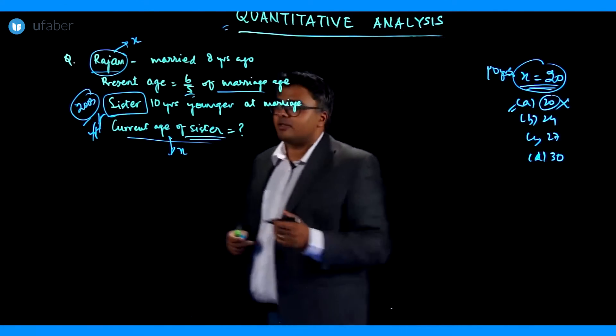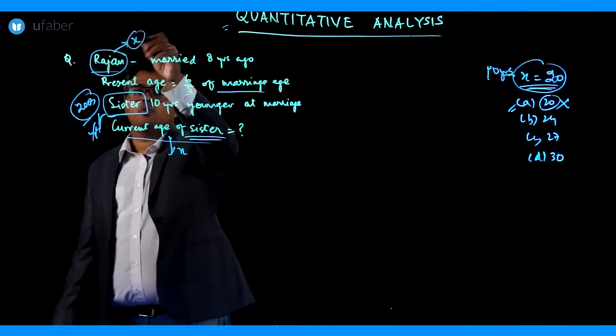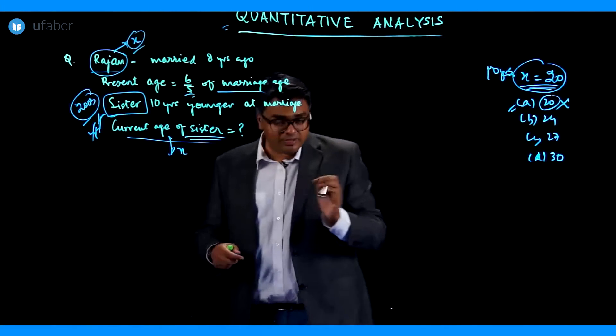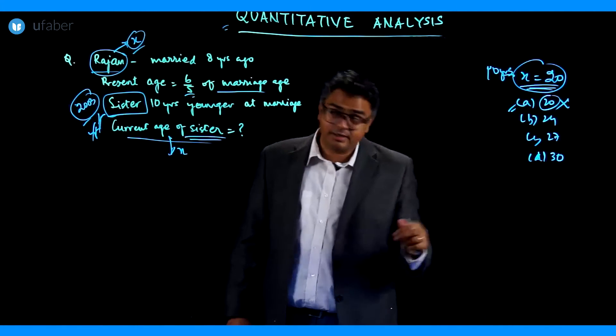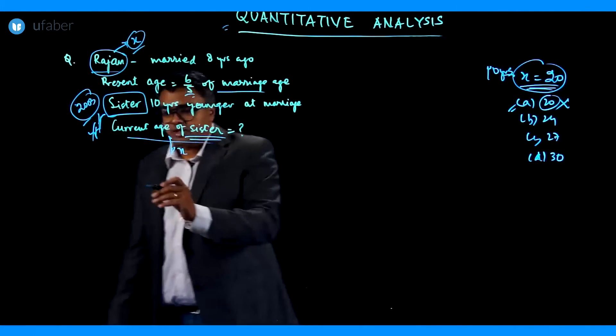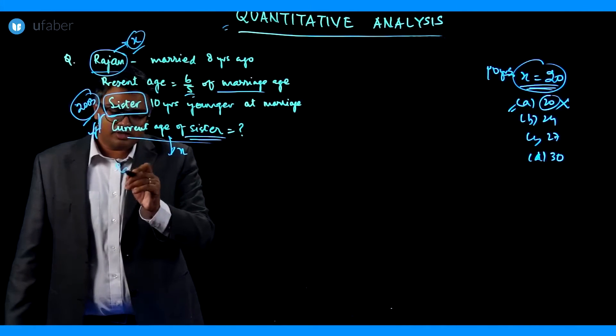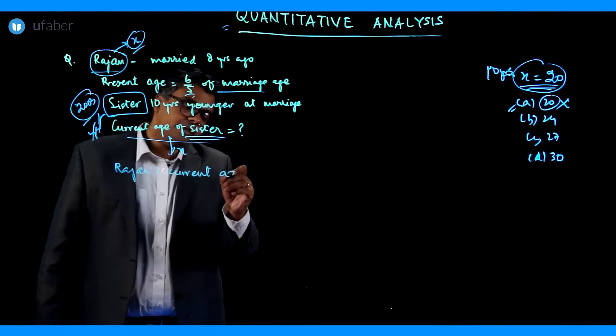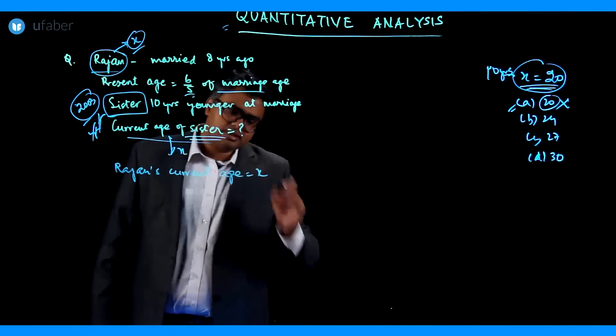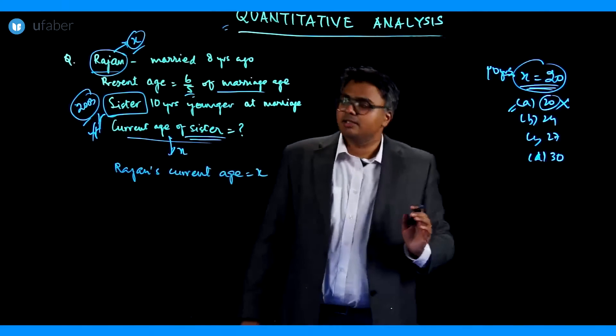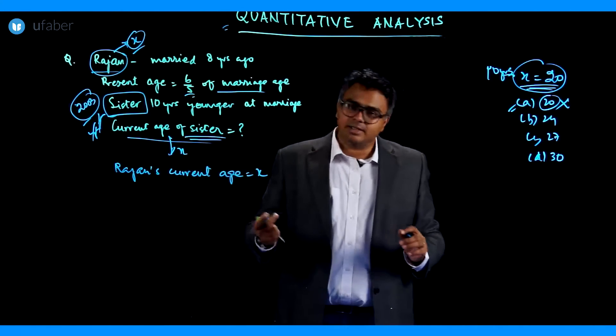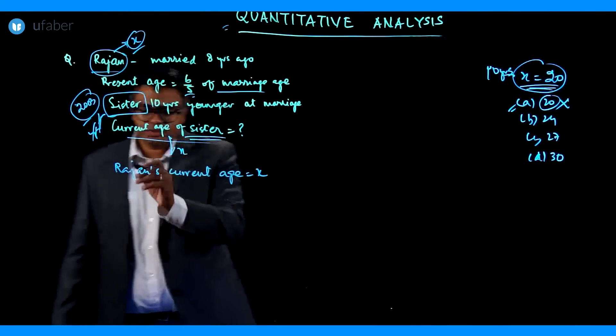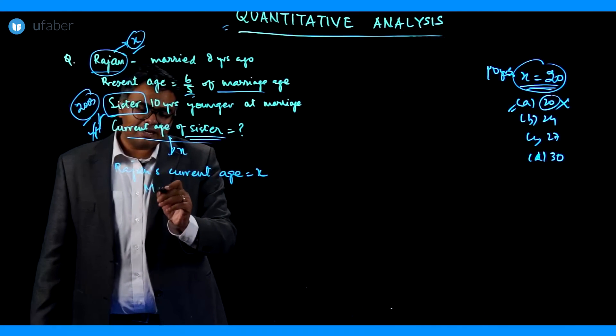So let's assume Rajan's age to be X. Let's assume Rajan's current age. We have to know Rajan had two ages, one currently, one at the time of marriage. So let's solve this equation now. We will say Rajan's current age is X. Let's assume that. Now we know when Rajan got married, then what would be his age? I will write it as marriage age.